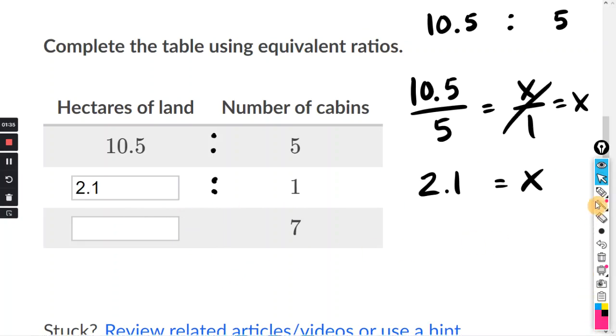Now you can just do the same thing again for the other box. I'll let this equal X. And this is our new ratio, so X divided by 7. We can set it equal to this one or this one right here. I'm going to use this one because it has the number 1. So X divided by 7 equals 2.1 divided by 1.